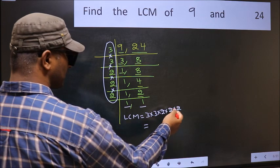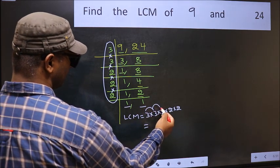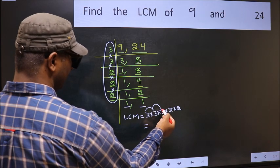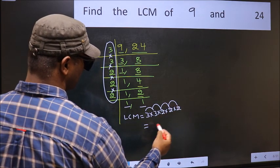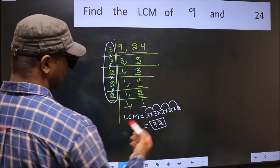Let us multiply these numbers. 3 into 3, 9 into 2, 18 into 2, 36 into 2, 72 is our LCM.